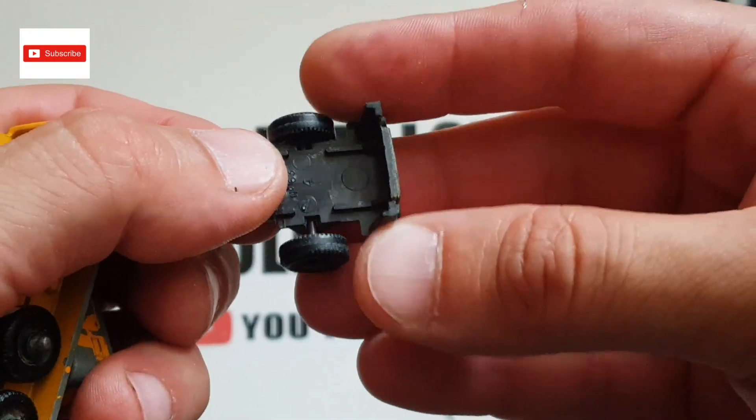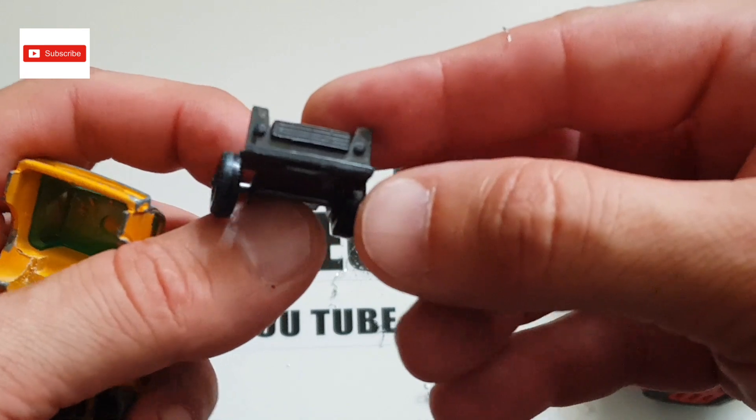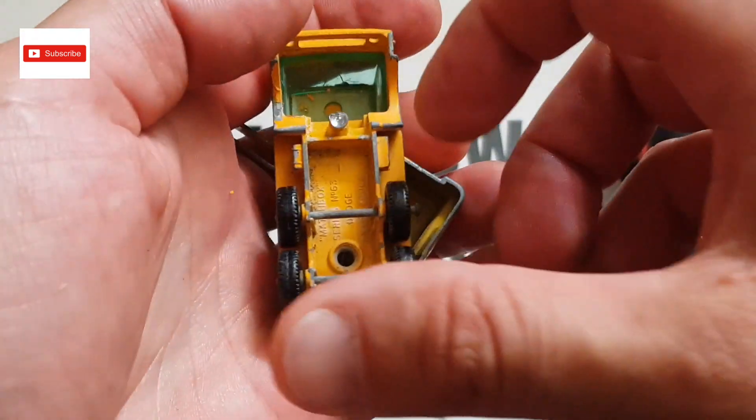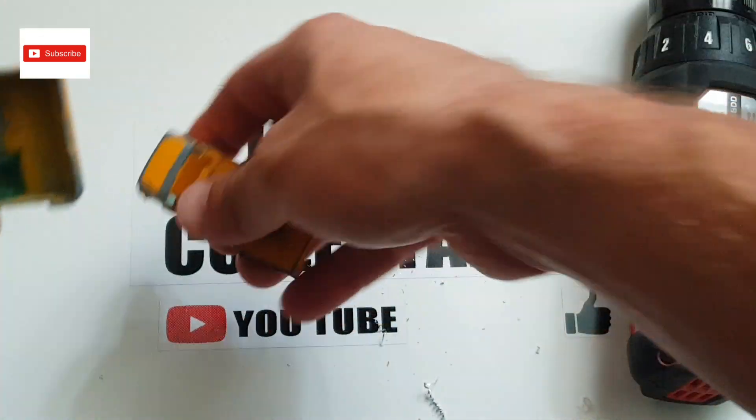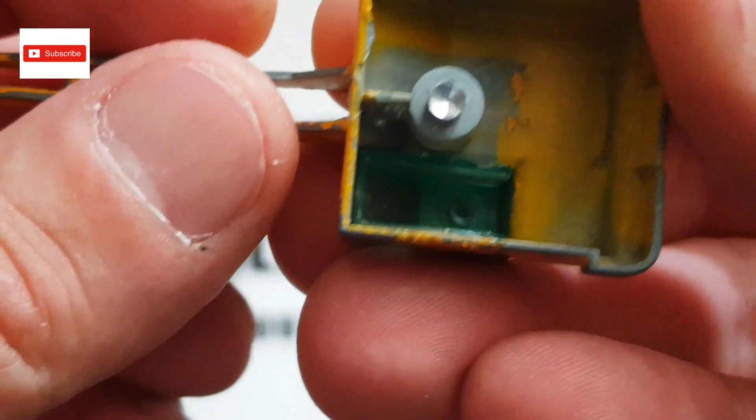So I've got the front off. I just have to take the wheel off and I've got the crane bits off as well.